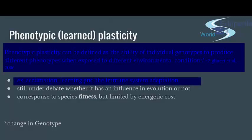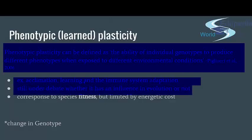Phenotypic plasticity is basically the fitness and changeability of a species, but it is limited by energy — you need a certain energy input to be able to adapt. This is the main problem we face with the environment in the past century. There were always changes on Earth, but what distinguishes the 20th and 21st century from the planet's history is that the changes are happening too fast.